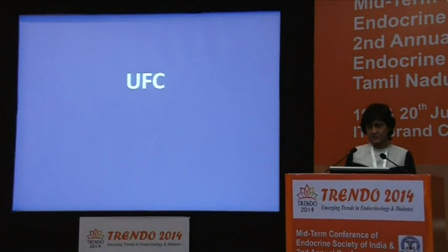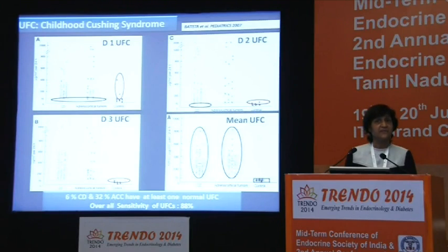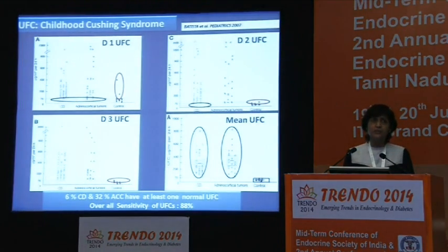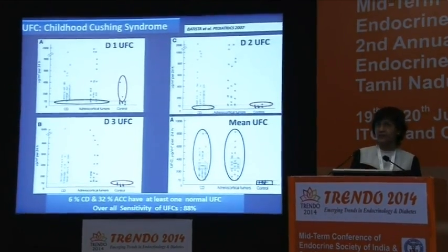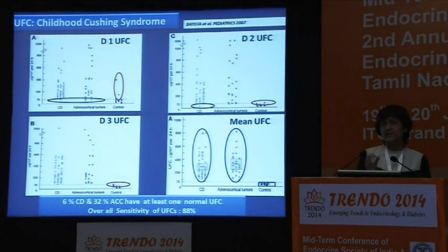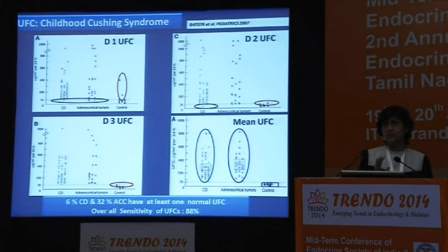Let me take you through each of these tests. When you ask for urinary free cortisol, it stands to great logic. It's an integrated value of 24 hours and should truly stand up to the challenge of making diagnosis very simple and effective. But UFC can pose multiple challenges. Its logistics are a bit of a challenge in terms of completeness of sample collection. Much more important is the sheer day-to-day variability in a patient with Cushing's syndrome, and anything up to 30% of patients can give you one sample which is perfectly normal.